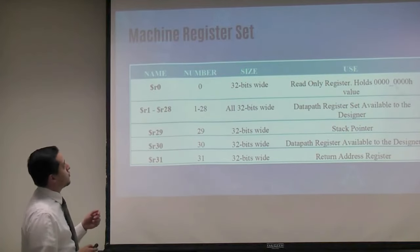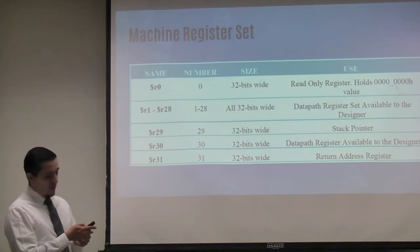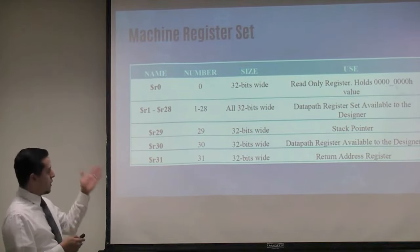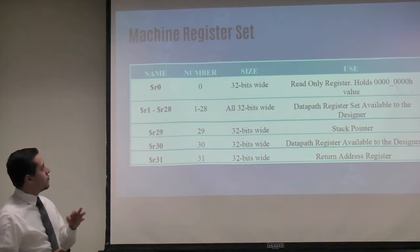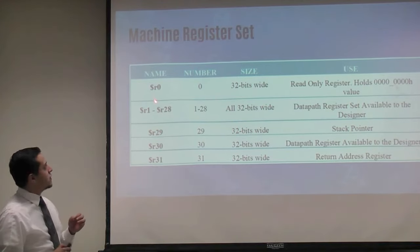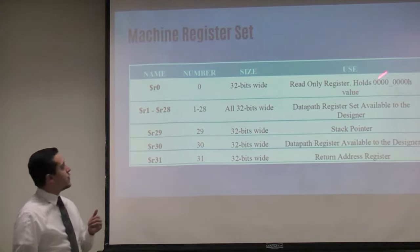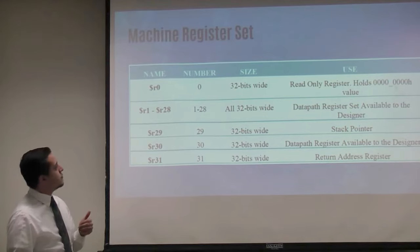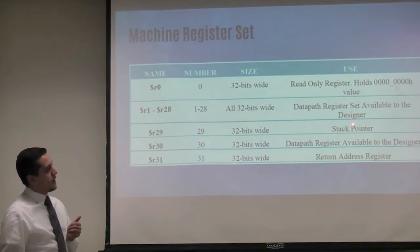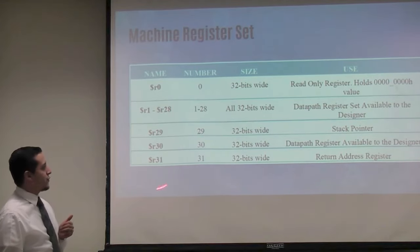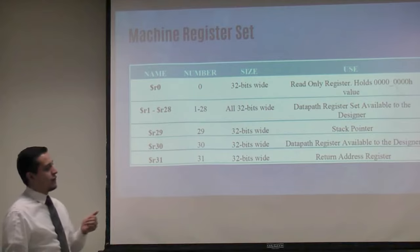Here is our machine register set: 32 registers and 3 important registers. Register 0 holds a zero value, register 29 is for a stack pointer, and register 31 is for the return address.